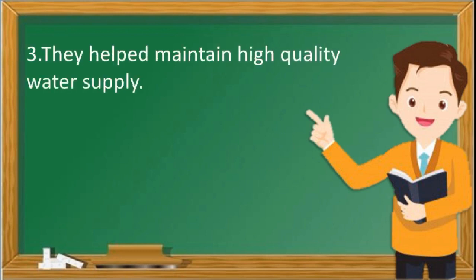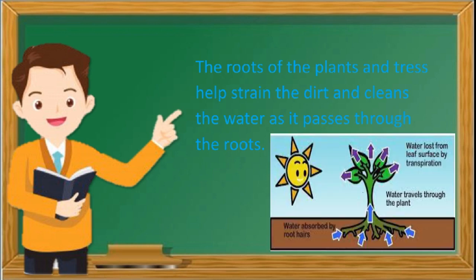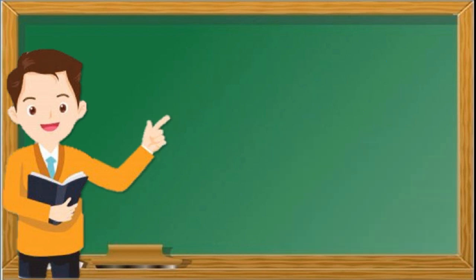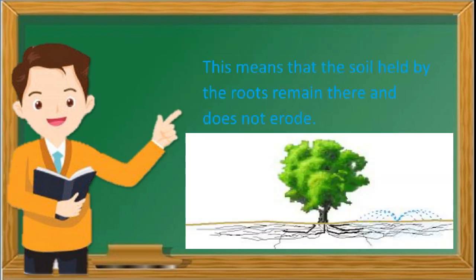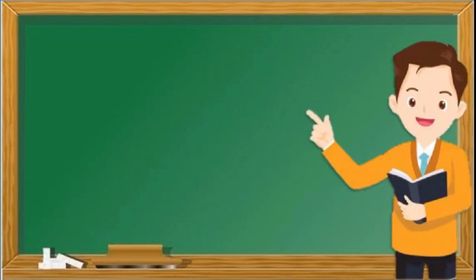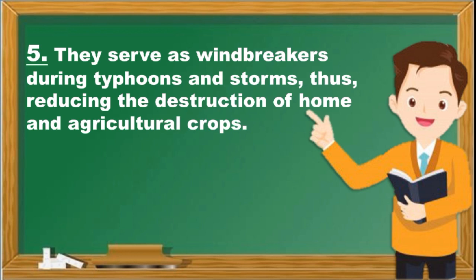Number three, they help maintain high quality water supply. The roots of plants and trees help strain the dirt and clean the water as it passes through the roots. Number four, the root system promotes soil stability. This means that the soil held by the roots remains in place and does not erode.